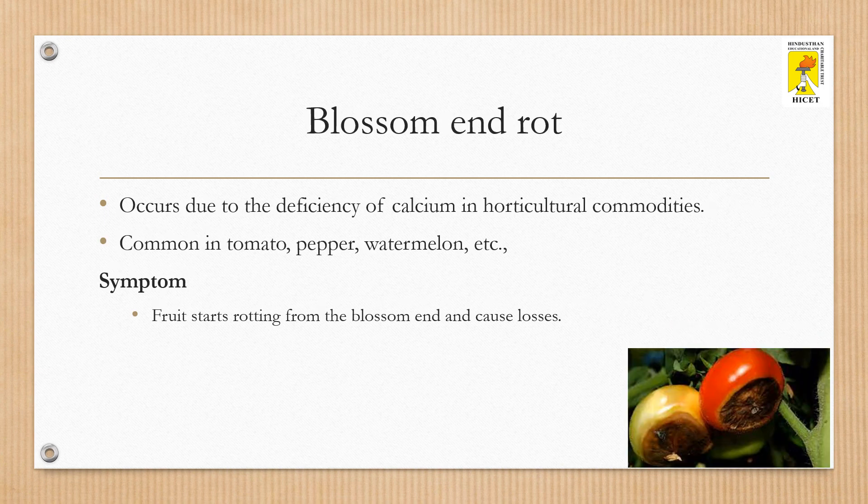Blossom end rot occurs due to the deficiency of calcium in horticultural commodities. It is common in tomato, pepper, watermelon, etc. The fruit starts to rot from the blossom end and causes losses. Pre-harvest sprays of calcium may be helpful in reducing the incidence of this disorder.